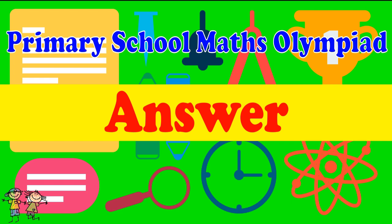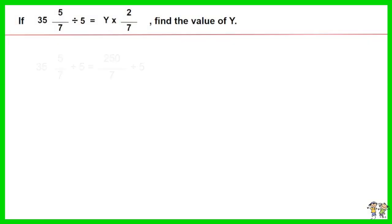Here is the recommended answer. 35 and 5 over 7 is also equal to 250 over 7.